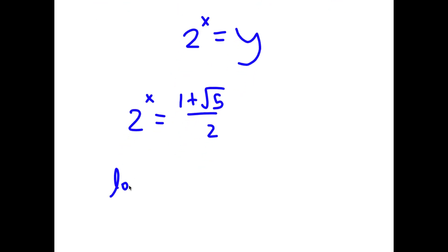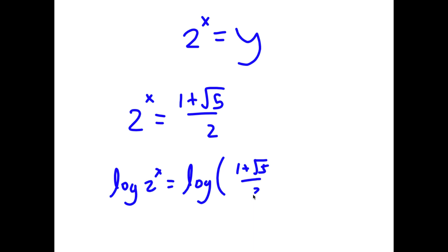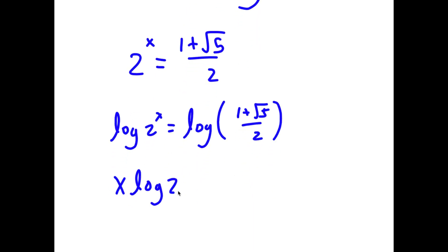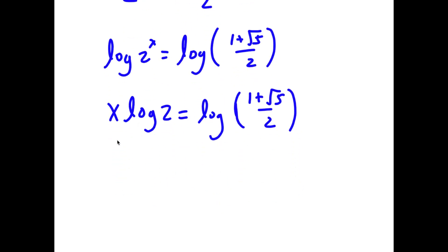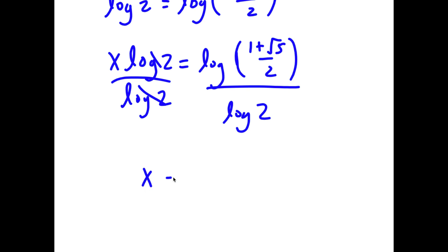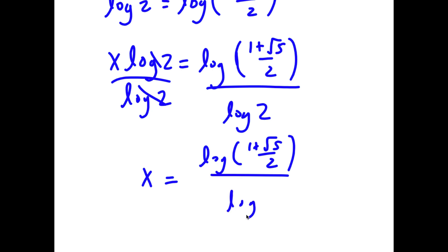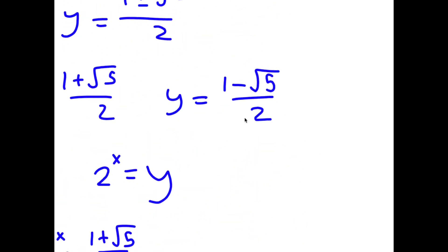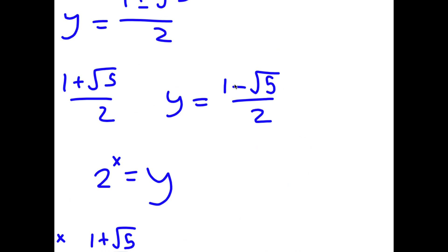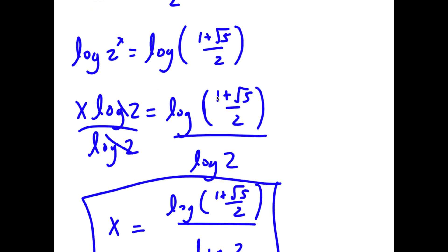To solve for x, I'm going to take the log on both sides. So I have x times log 2 is equal to log of 1 plus the square root of 5 over 2. Dividing both sides by log 2, I get x is equal to log of 1 plus the square root of 5 over 2, all over log 2. For the case y equals 1 minus the square root of 5, that's a negative number, and 2 to the power of any number can't be negative, so that solution is rejected. My only solution is x equals log of 1 plus the square root of 5 over 2, over log 2.